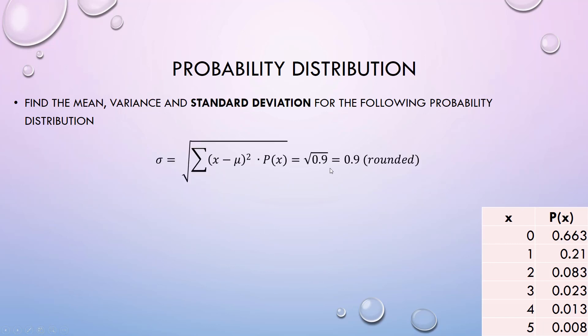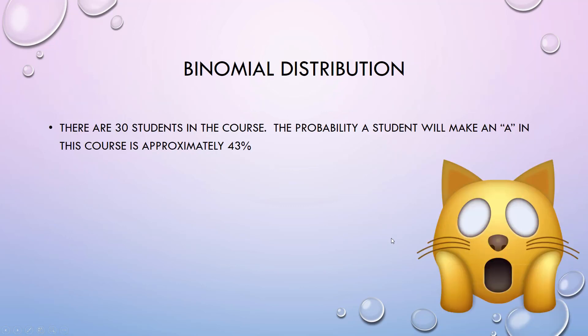If I have a binomial distribution, there are 30 students in this course. The probability a student will make an A in the course is, let's hope it's higher than that, but let's say it's 43 percent. Binomial: you either make an A or you don't. I want to find the average number of students that make an A. For a binomial distribution, the average, the expected number, is n times p. P is the probability of success, that they made an A. So about 13 students.